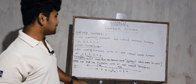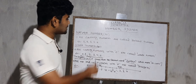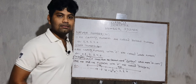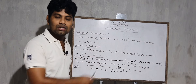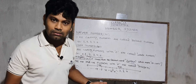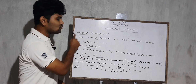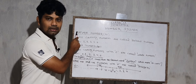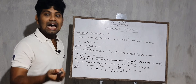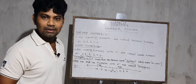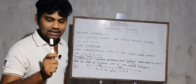Natural number is denoted by N. Why N? Because the first letter of the word 'natural' is N. That's why we take N as the symbol for natural numbers.